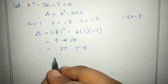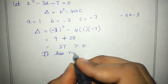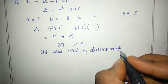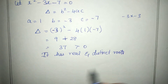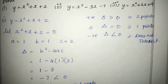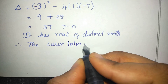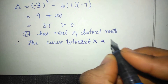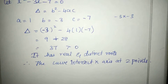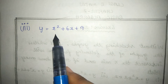Since discriminant is greater than 0, it is positive, meaning real and distinct roots. There are two points. The curve intersects the x-axis at two points. Second subdivision complete.